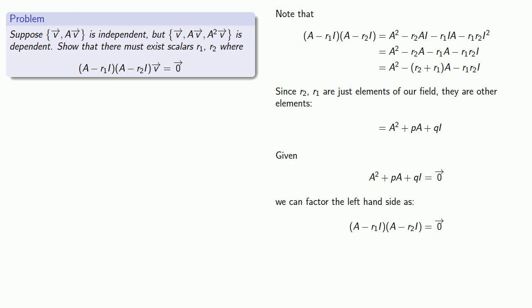Alright, let's put it together. Since v, Av, A²v are dependent, we must be able to express one of these in terms of the others.